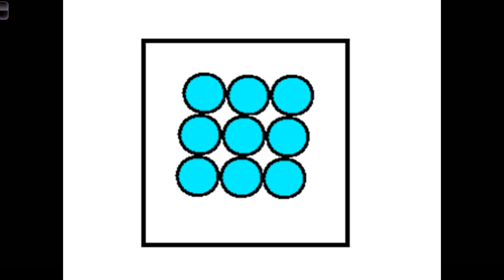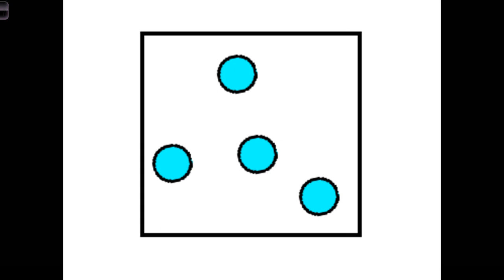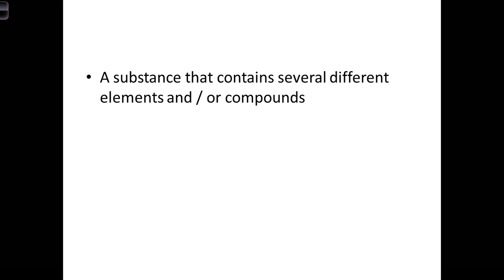Number four is an element again. There's still only one type of atom, and even though they're separate it doesn't matter — if there's only one type of atom, it's an element. Number five: